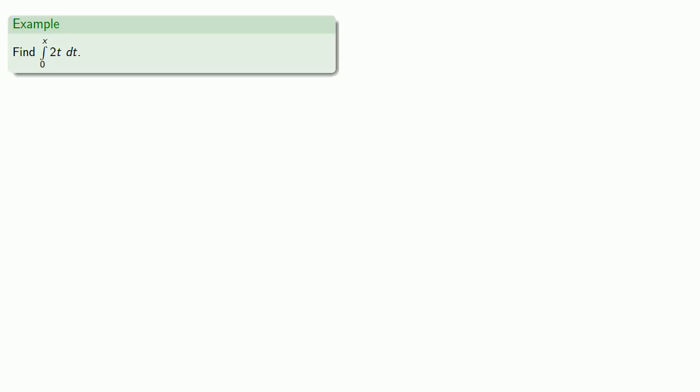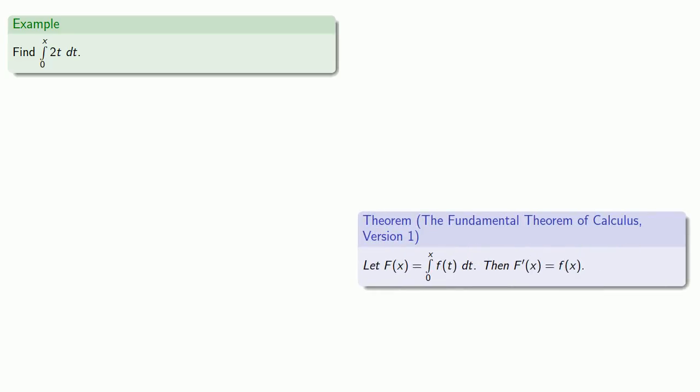And so now we're ready to find some definite integrals. Let's find the definite integral from 0 to x of 2t dt. Our fundamental theorem says that if capital F of x is this integral then the derivative is going to be the integrand where we use x instead of t and so our derivative is going to be 2x which means that capital F of x is going to be x squared plus c.